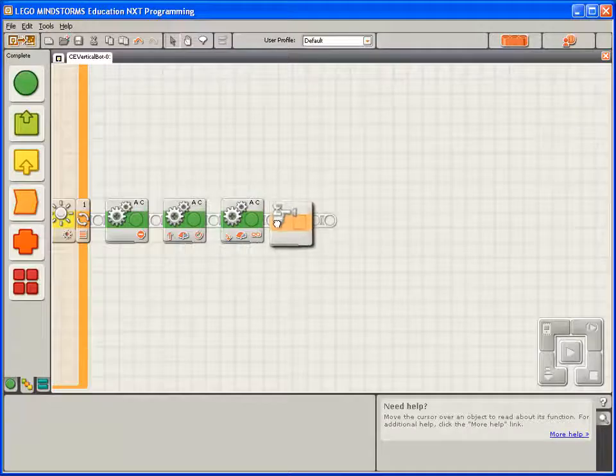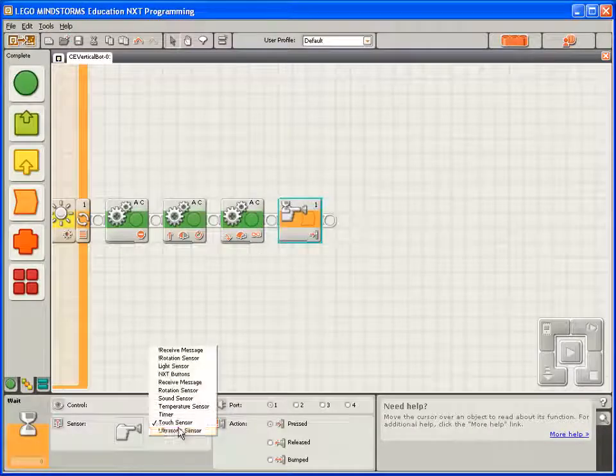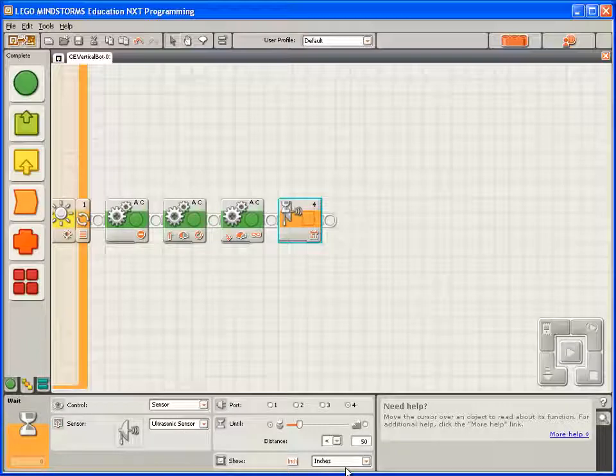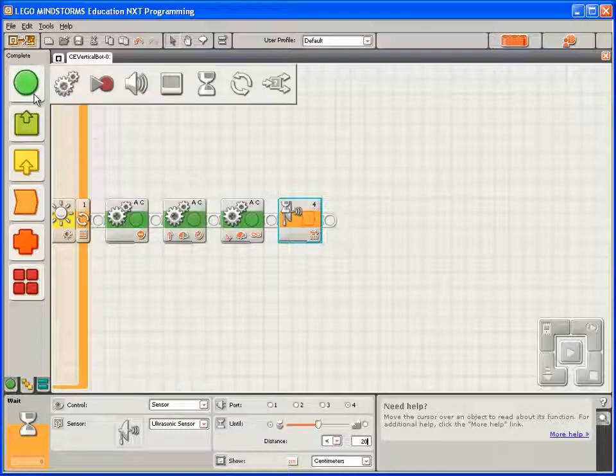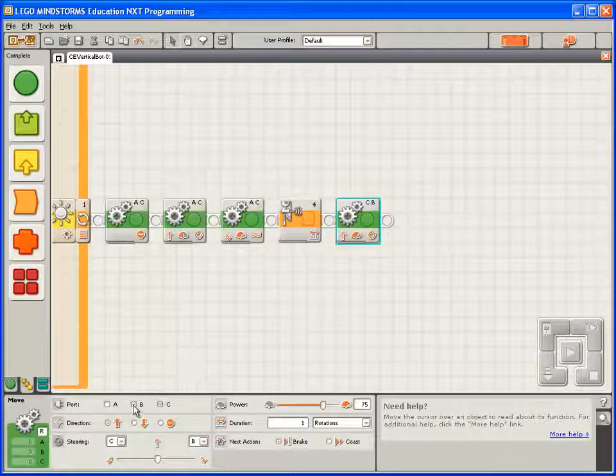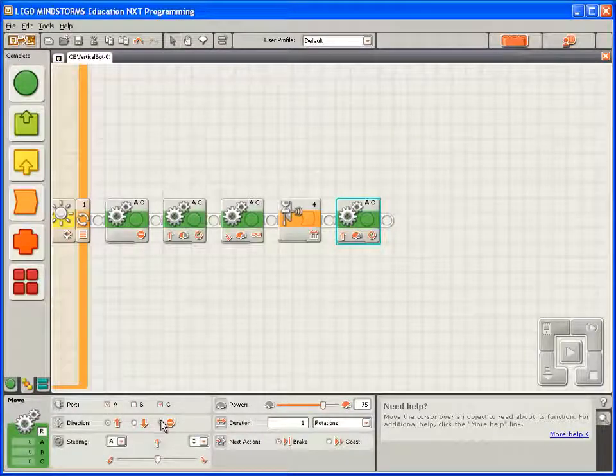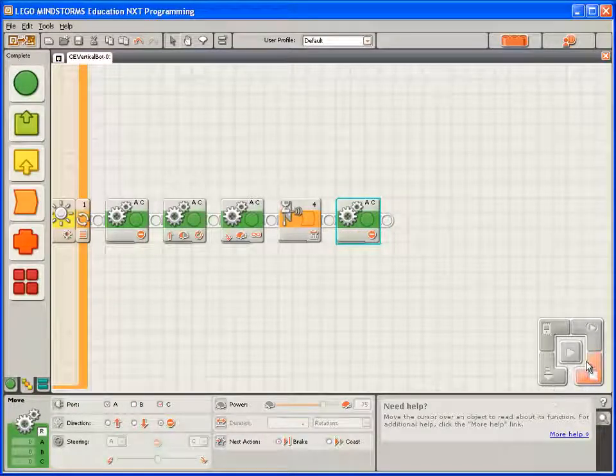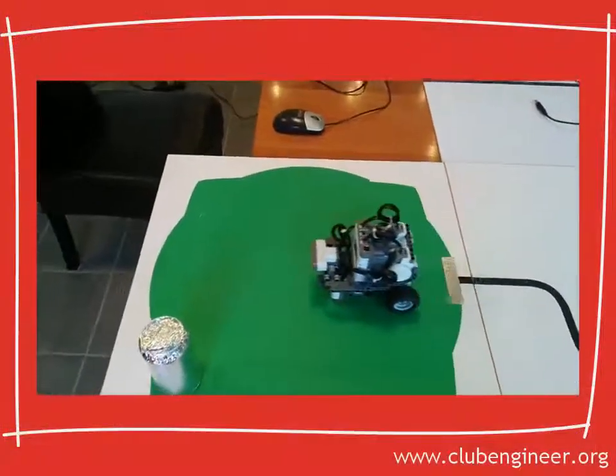Now we'll drop down a wait block. We'll set it to wait for the ultrasonic sensor. By default it's measuring the distance between the ultrasonic sensor and its object in inches. We're more familiar with using centimeters, so I'll change that. And we'll set it to wait until it detects an object 20 centimeters away from it. Once it's detected an object 20 centimeters away, we will stop the motors. Let's compile, download and run that, and see how it looks.